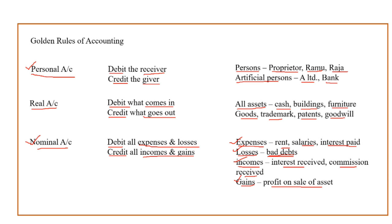So this is the golden rule of accounting — a very simple rule. If you understand this rule, you can record journal entries without memorizing. To recap: Personal account — name of a person or artificial person — debit the receiver, credit the giver. Real account — all assets — debit what comes in, credit what goes out. Nominal account — all expenses, losses, incomes, and gains — debit all expenses and losses, credit all incomes and gains. Having understood these golden rules, let us see how to apply them to work out journal entries.